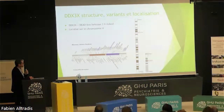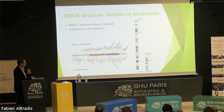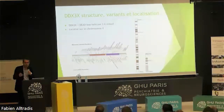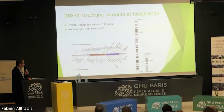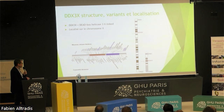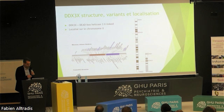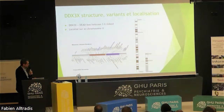DDX3X is located on the X chromosome — specifically on the short arm, called 'p,' in subsection 1.4, so Xp11.4. That's just like sat-nav coordinates for this gene. You can see the DDX3X gene here — this is how it looks — and we've identified many different variants that appear on the screen.